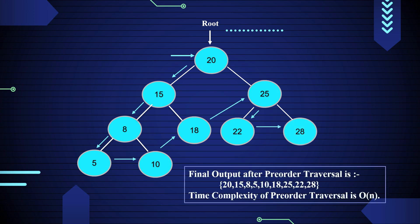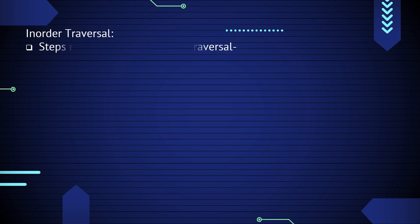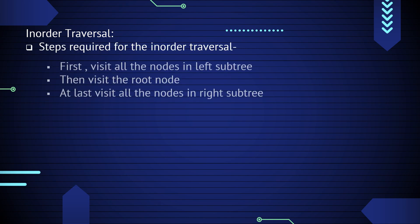Stop the process. After the completion of pre-order traversal, the final output is 20, 15, 8, 5, 10, 18, 25, 22, 28. The time complexity of pre-order traversal is O(n), where n is the size of the binary tree.